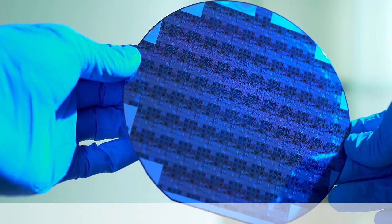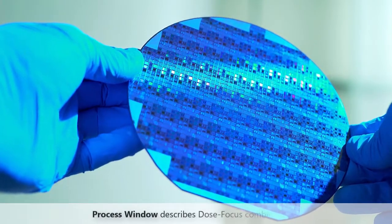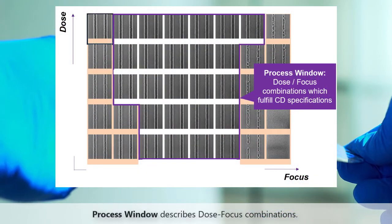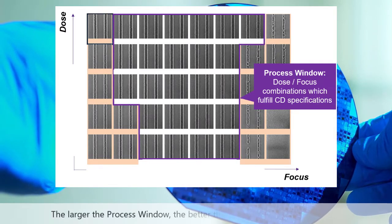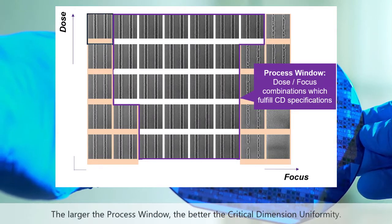This process margin is expressed in the so-called process window, which describes dose-focus combinations that keep the critical dimension within specifications. The larger the process window achieved, the better the critical dimension uniformity.